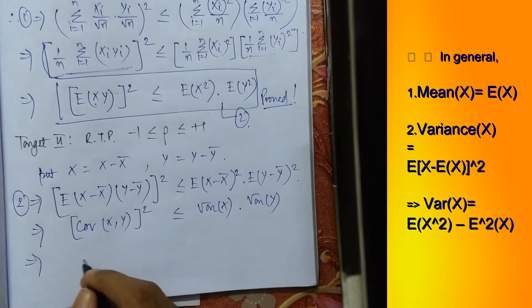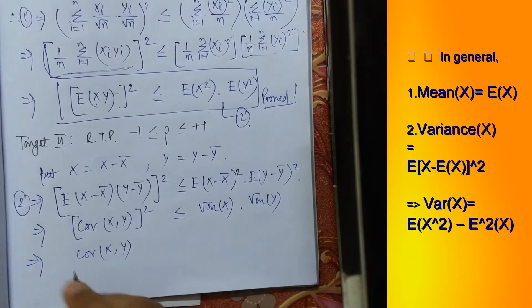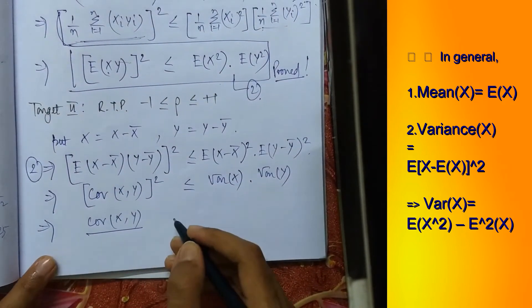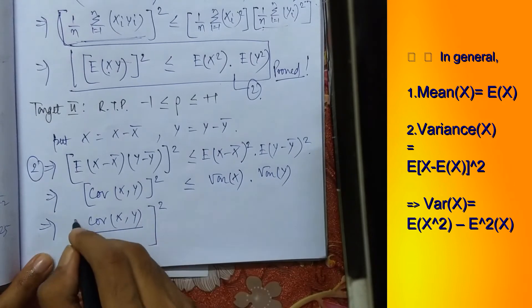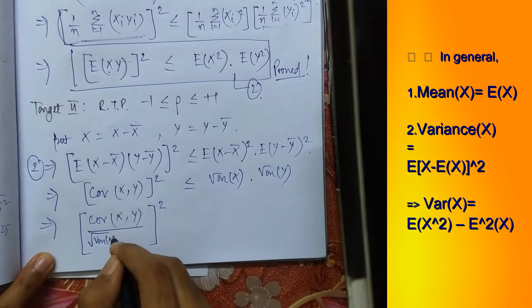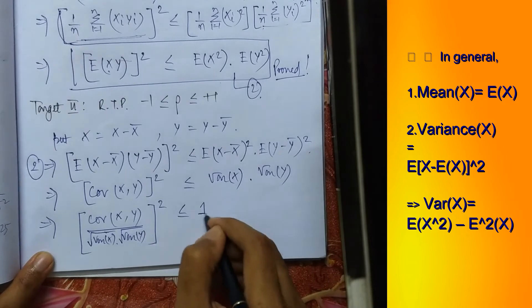Now we shift this to the left hand side. Covariance of x comma y by, we tend to put this in a whole square form, so if we keep the whole square, this will be root over of variance of x into root over of variance of y, which is less than equals to 1.